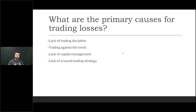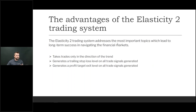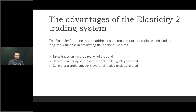With the Elasticity 2 trading system, you can overcome all of these. The system takes trades only in the direction of the trend, and for every single trade you get, you're going to have a stop loss level on all of your signals as well as a profit target level — regardless of whether you're trading long or short. So you're always going to have everything in place before you even get into the trade, and you'll know exactly where everything should be set with your broker.